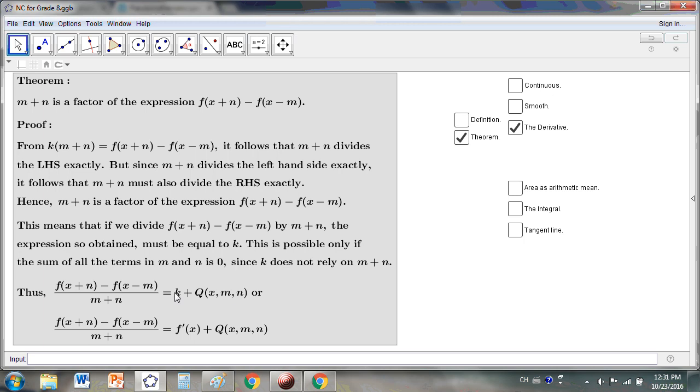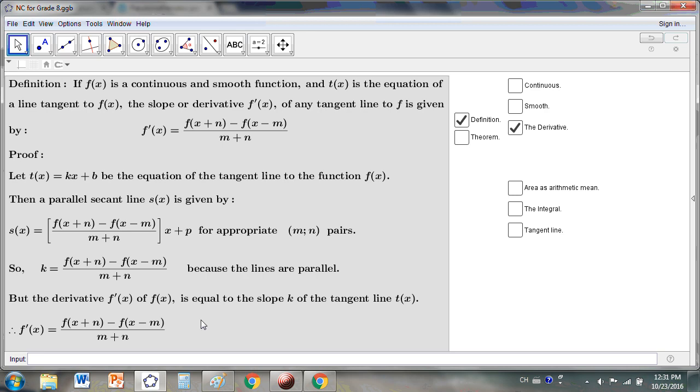That means k, to be equal to this slope here, k must be the situation that is given when q(x) of m, n is equal to 0. Otherwise k is not equal to f'(x). It's as simple as that. And of course by the definition it's easy to see it too. Because we have t(x), the tangent line equation, and s(x), the parallel secant line equation.